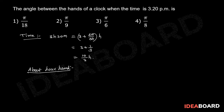One complete rotation of the hour hand takes 12 hours, equal to 360 degrees, equal to 2 pi radians. That means in 12 hours the hour hand covers 360 degrees. In one hour, the hour hand covers an angle of 360 degrees by 12, that equals 30 degrees, equal to pi by 6 radians.